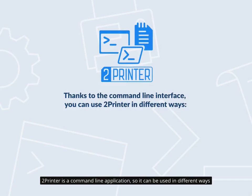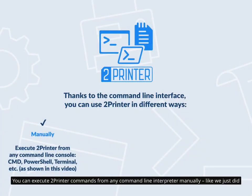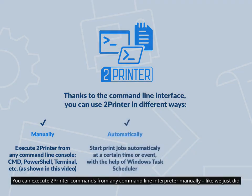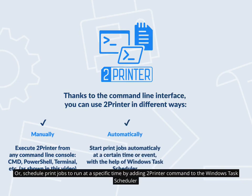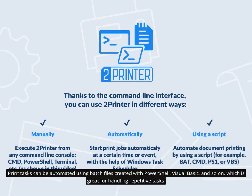2Printer is a command line application, so it can be used in different ways. You can execute 2Printer commands from any command line interpreter manually, like we just did. Or schedule print jobs to run at a specific time by adding a 2Printer command to the Windows Task Scheduler. Print tasks can be automated using batch files created with PowerShell, Visual Basic, and so on, which is great for handling repetitive tasks.